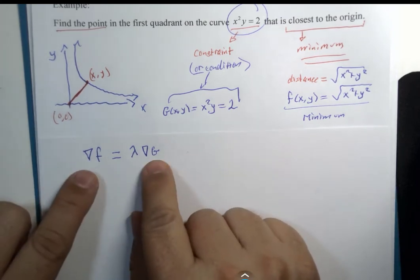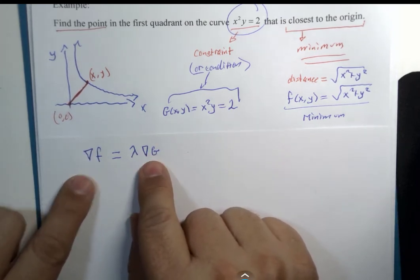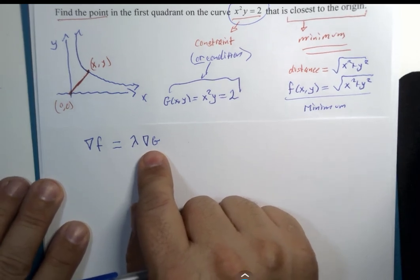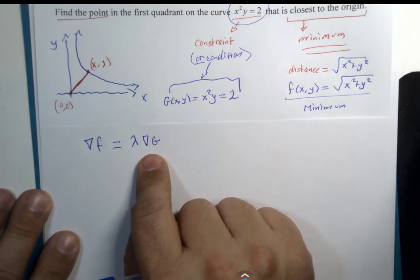And it would be multiplied by a scalar for them to be equal to each other. So, the vectors, these are vectors, are parallel to each other. Same direction, maybe not the same magnitude.